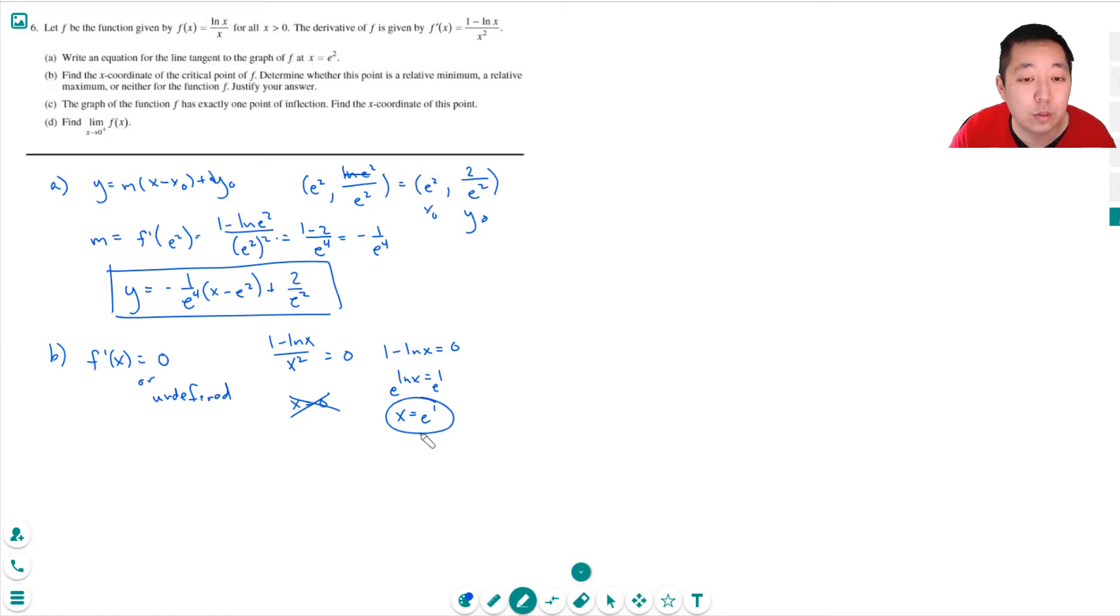Now, to determine whether it's a min or a max, we look at the derivatives to the left and right. So if I look at e to the 0, e to the 1, and e squared, for example, for the different values of x, I know that f prime is 0 here. e to the 0 would be 1. This would be 1 minus 0 over 1. That would be positive. e squared would be 1 minus 2 over a positive number. That would be negative. So this goes from increasing slopes to 0 slope to decreasing slope. This is a relative max.